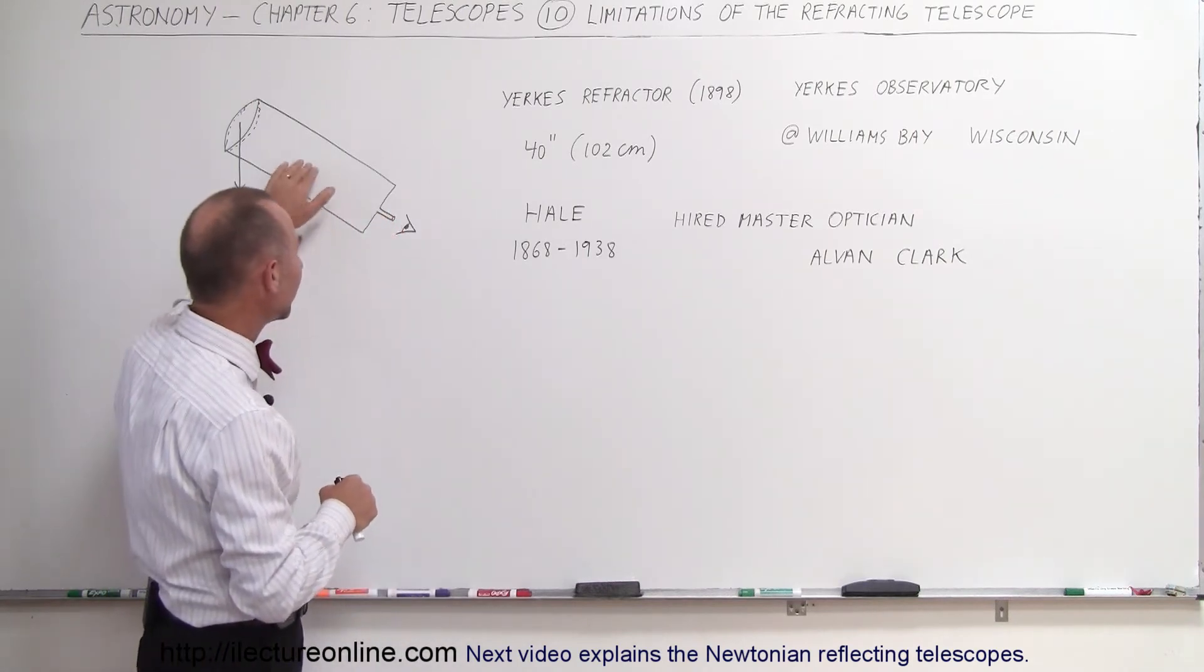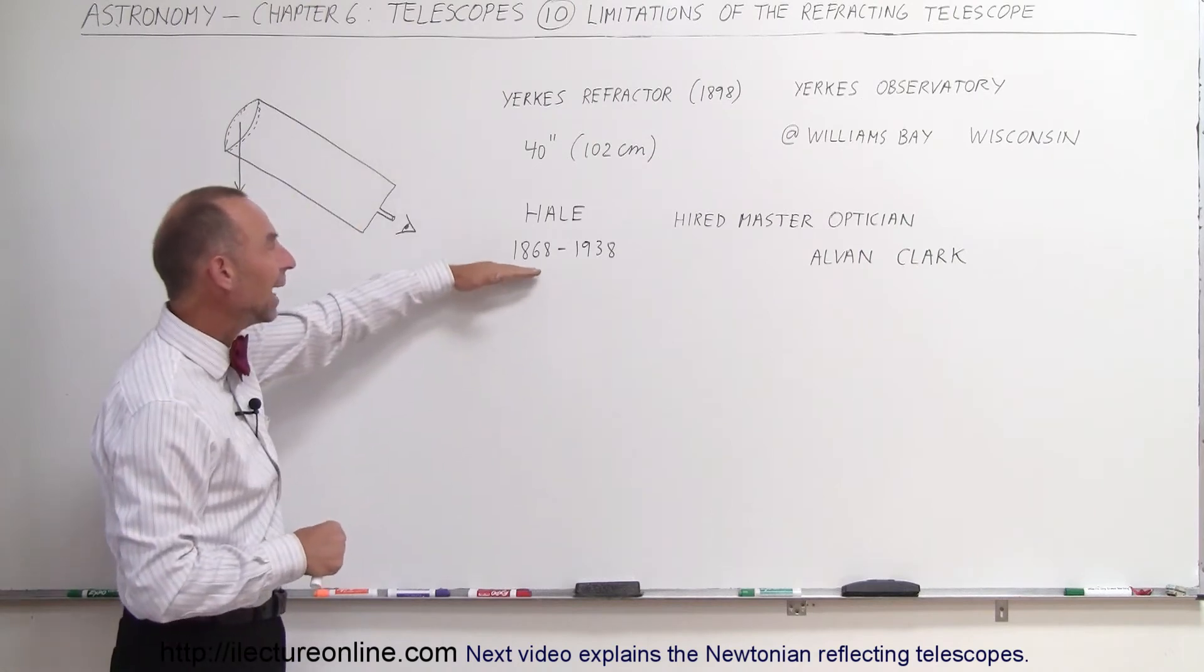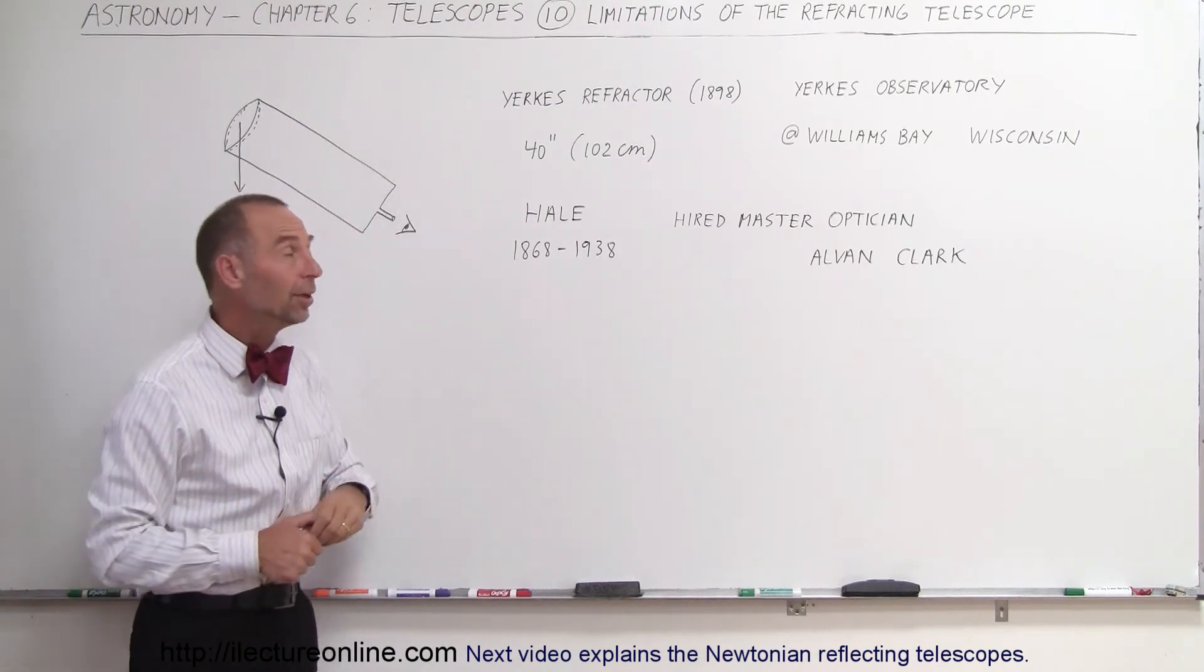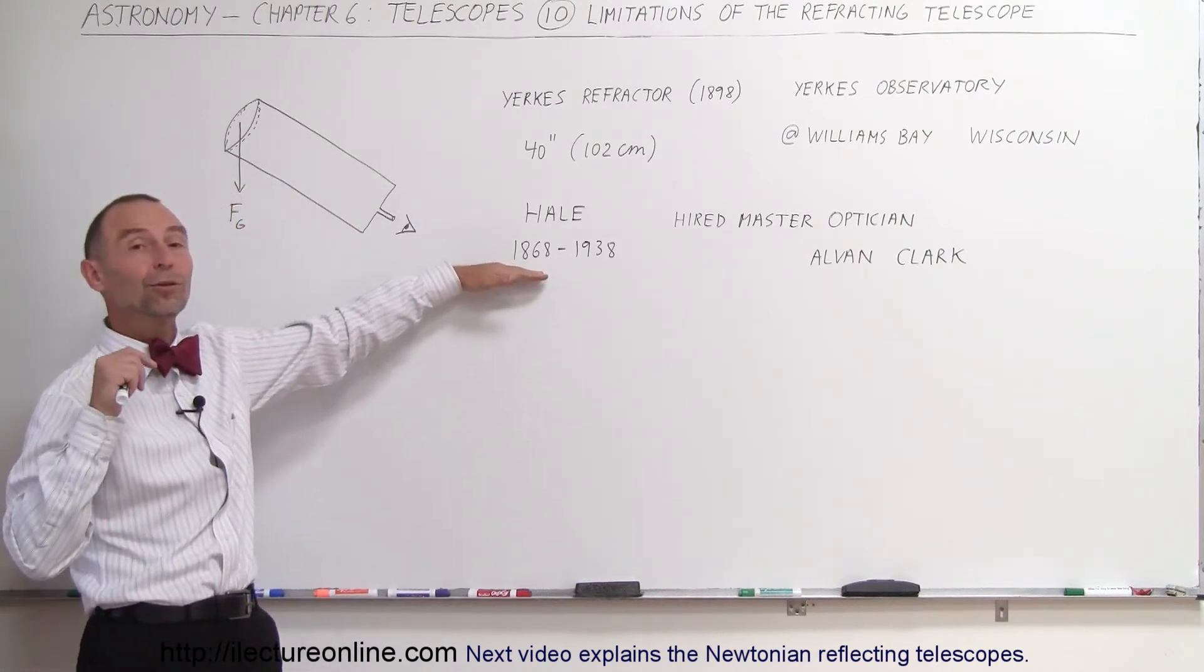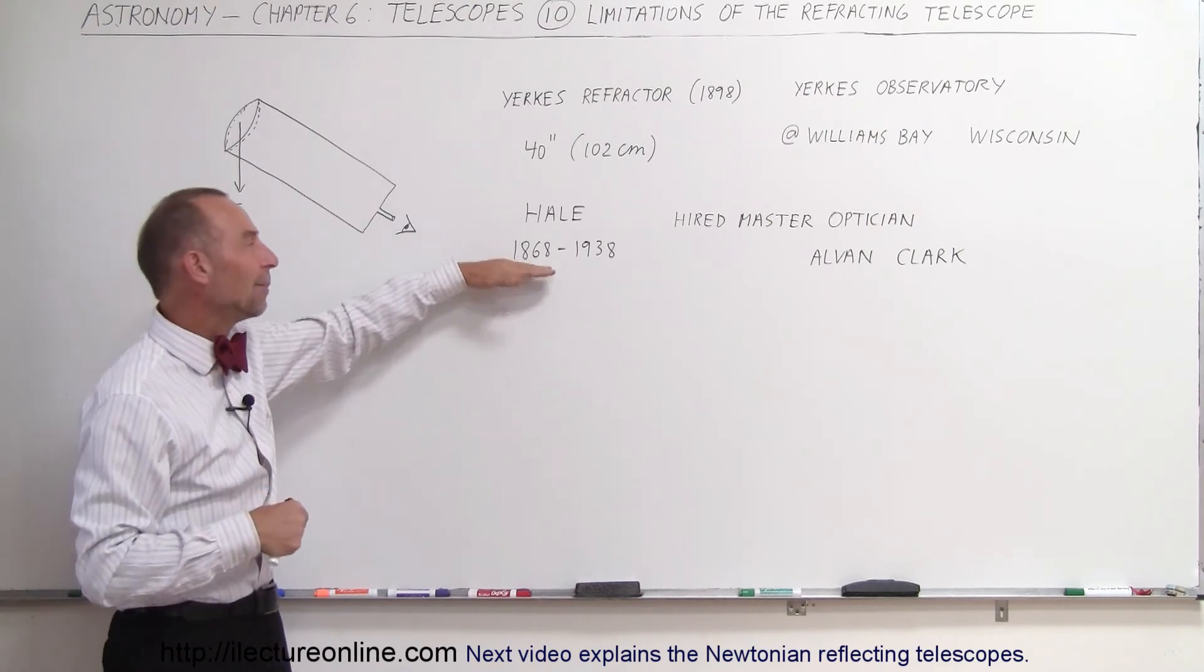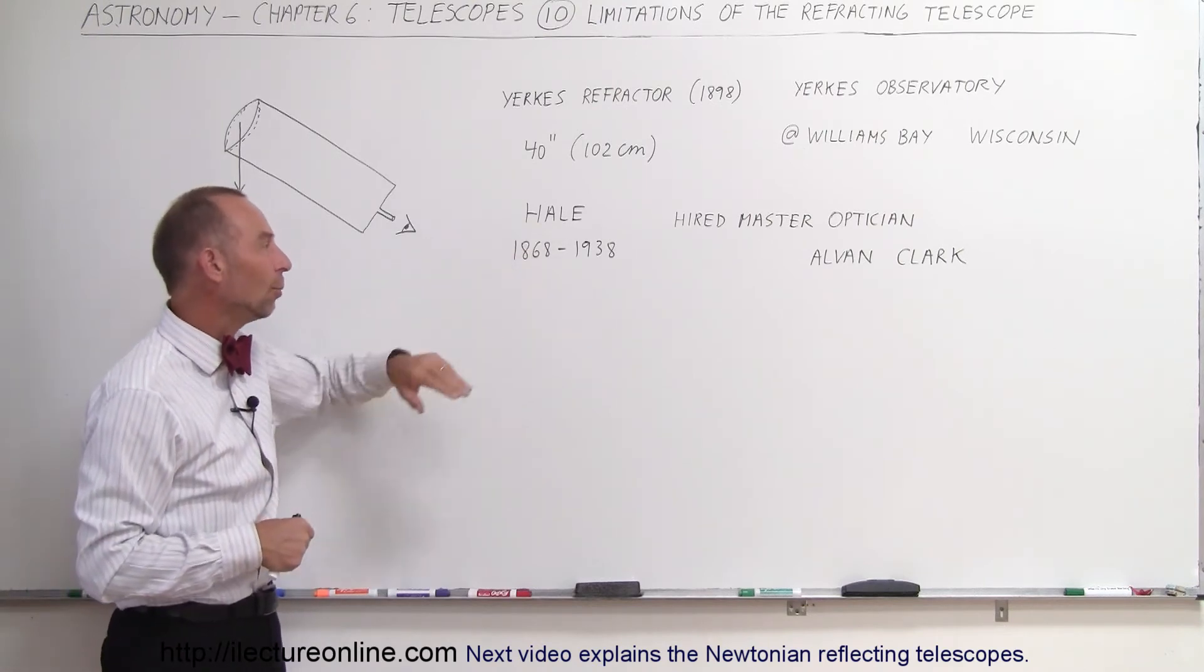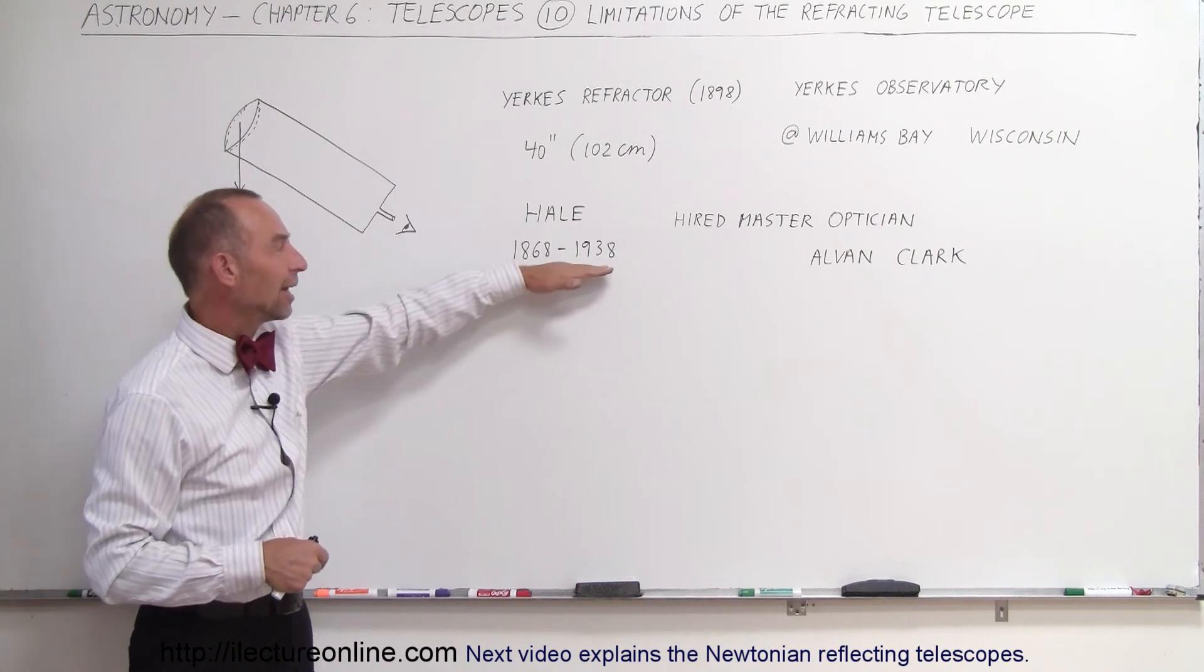Now, who came up with the idea of building the Yerkes refractor? It was Hale. Hale's a very famous astronomer. Matter of fact, the observatory on Mount Palomar in California was named after him, that's called the Hale Telescope. He lived from 1868 to 1938.